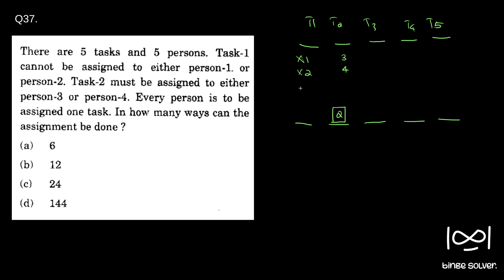Persons 1 and 2 cannot take up task T1, so the options left for T1 are persons 3, 4, and 5. Once we assign T2 — either to person 3 or person 4 — one of those three options is gone. So after assigning T2, we have only two options left to fill T1: either 4 or 5, or 3 or 5, depending on who was assigned to T2.